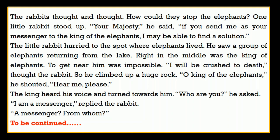The little rabbit hurried to the spot where the elephants lived. He saw a group of elephants returning from the lake. Right in the middle was the king of elephants. To get near him was impossible. 'I will be crushed to death,' thought the rabbit. So he climbed up a huge rock. 'Oh, king of the elephants,' he shouted, 'hear me, please.' The king heard his voice and turned towards him. 'Who are you?' he asked. 'I am a messenger,' replied the rabbit. 'A messenger? From whom?' This is the partial reading of the text, and we will conclude this story in its next parts.